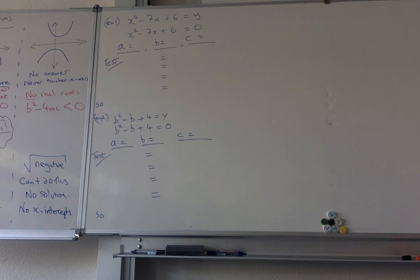When it touches only one time, we've only got one real repeated root, and we say that's b squared minus 4ac is equal to zero. And if it never touches the x-axis because there are no real roots, then b squared minus 4ac is less than zero.